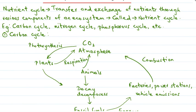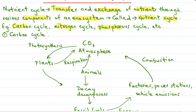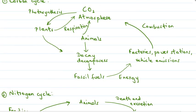So now let's quickly revise everything that we have covered today. We have learned about the nutrient cycle — the transfer and exchange of nutrients that takes place through various components of an ecosystem. We have taken some examples of nutrient cycle like the carbon cycle, nitrogen cycle, and phosphorus cycle, and here we have discussed in detail about the carbon cycle and the nitrogen cycle. Carbon is an important component of all living organisms and exists as part of the carbohydrates.